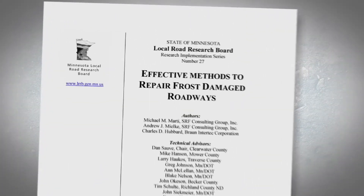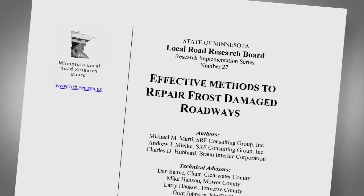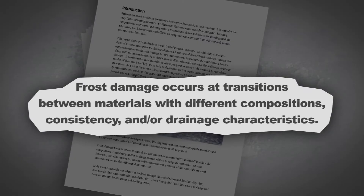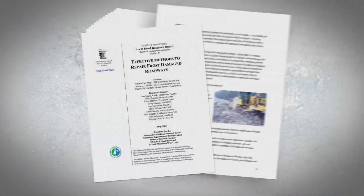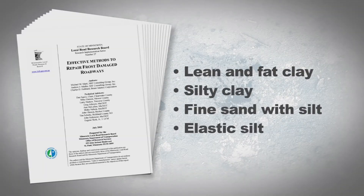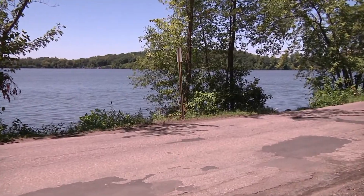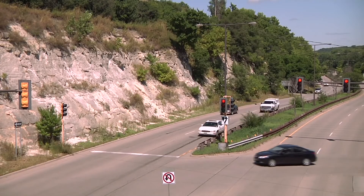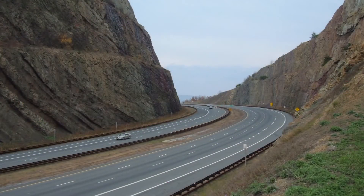In 2003, this Minnesota Local Road Research Board report provided more detail on how frost action occurs and showed how to avoid it. The report notes that frost damage is most likely to occur at transitions between roadway materials that differ in composition, consistency and/or drainage characteristics. The report lists types of soil that may be frost susceptible, pointing out that all these types are fine-grained, have poor drainage characteristics and tend to hold water. The groundwater that freezes to create frost heave can come from precipitation or nearby lakes, streams, swamps or springs and is more likely to cause a problem where there are natural or human-made swales, valleys and cuts in the terrain that direct water toward the pavement.